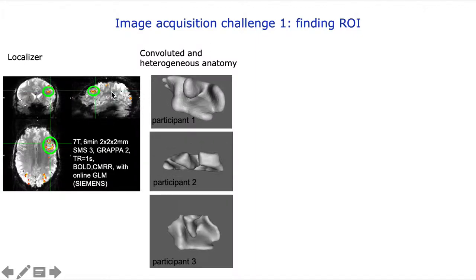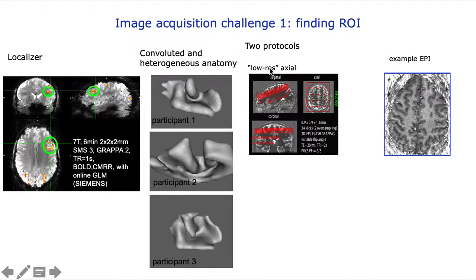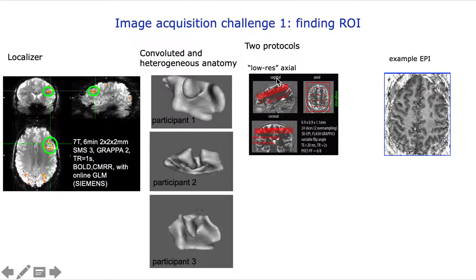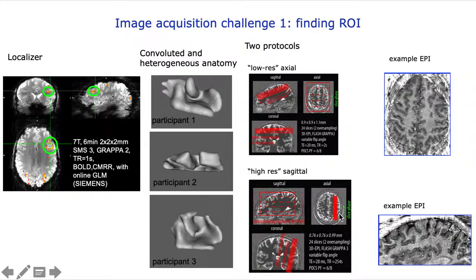Based on this location, we adopted a two-pronged approach: a moderate high-resolution axial protocol covering both sides of the DLPFC, and on top of that, a higher-resolution sagittal readout covering only one side.